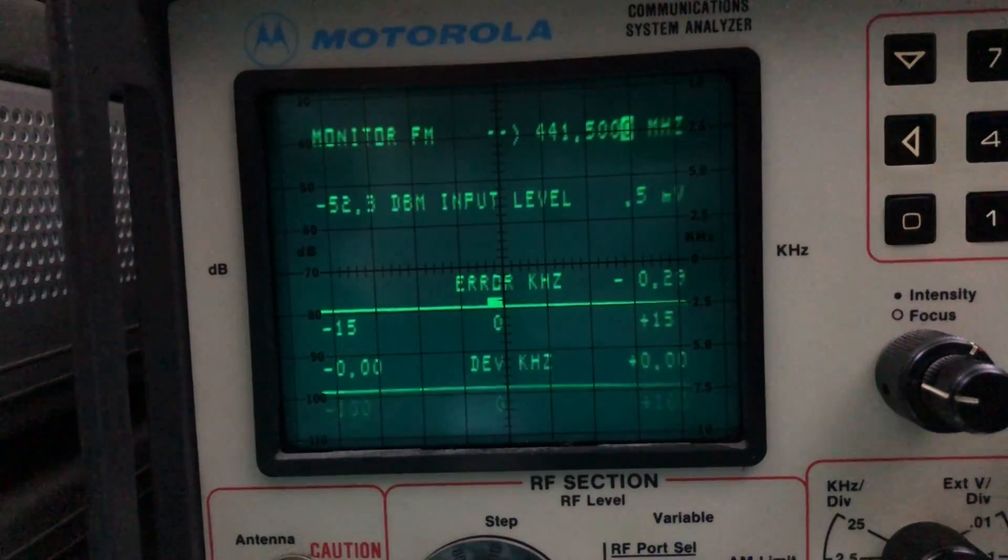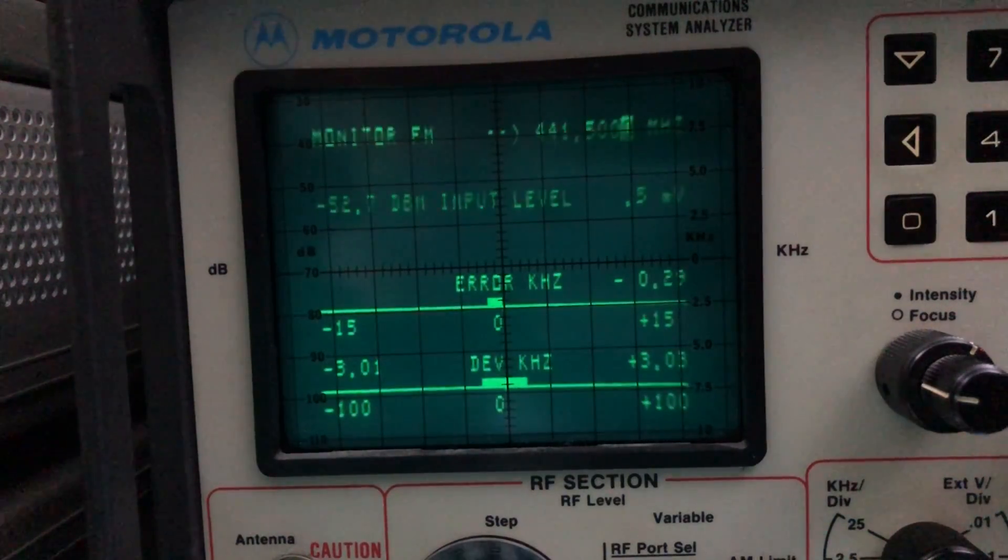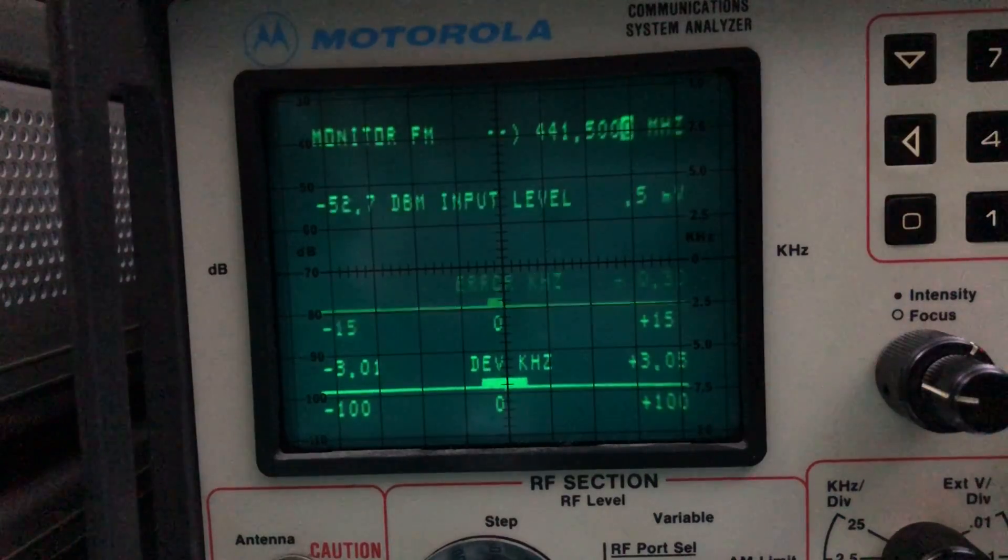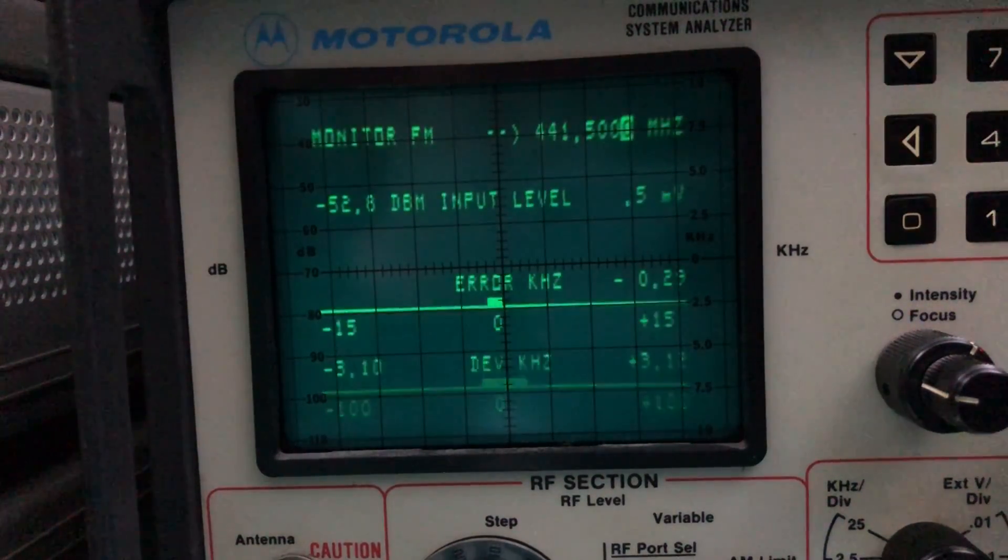And right about 12 is kind of where we lose it. So it's beyond what it can read. But it's still there. So we are using the wide band input. Just to prove that. And one KC tone. There we go. Looks good.